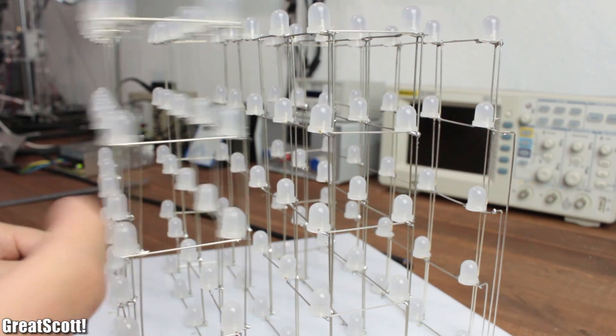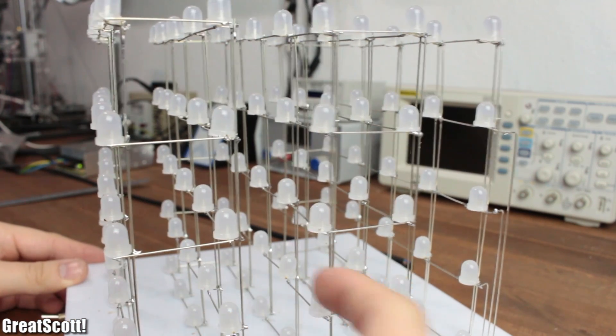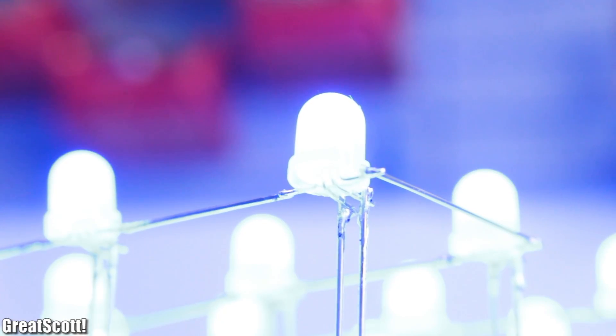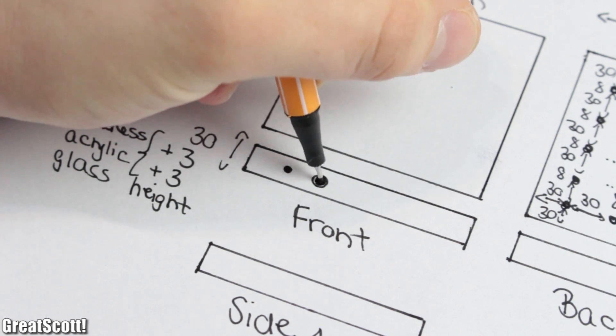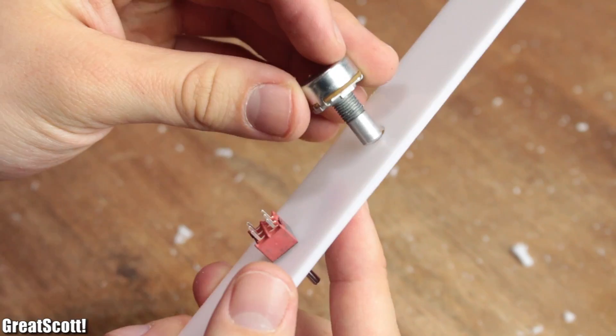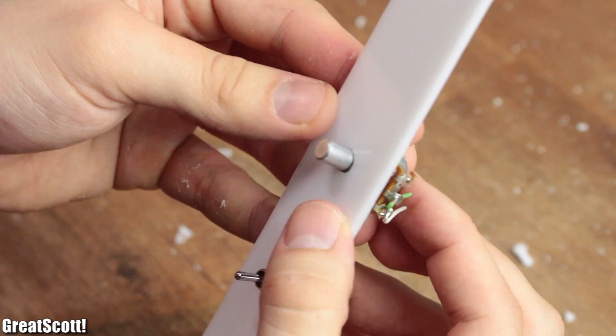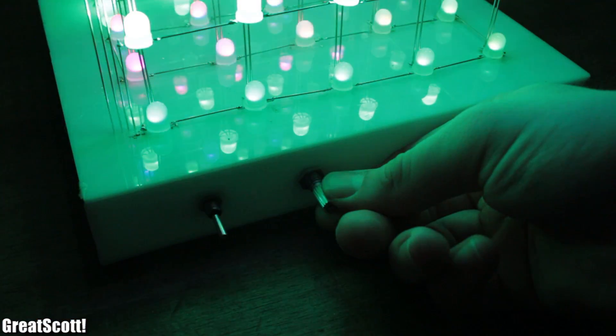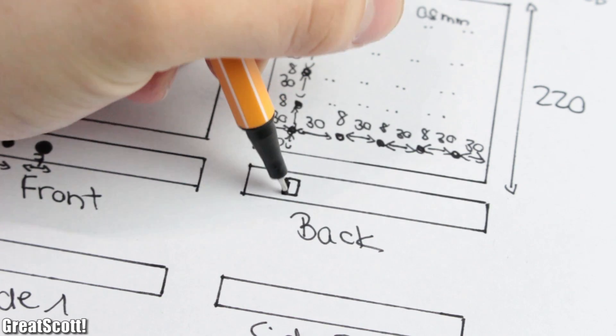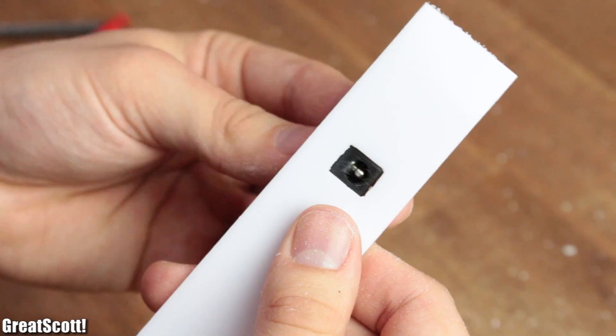The front has two round holes for the main switch and a potentiometer, which I can use later to set the brightness of the LEDs. And the back piece has a rectangular cutout for the DC power jack.